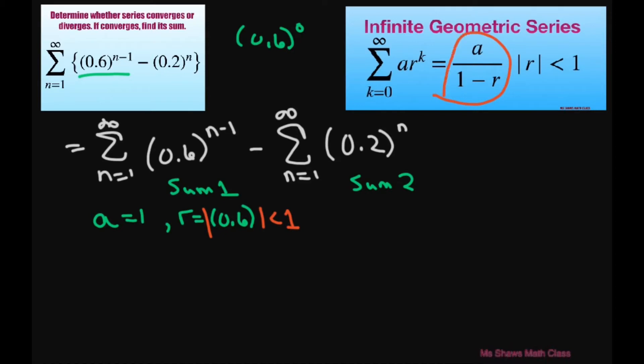It converges to 1 divided by 1 minus 0.6, which equals 1 divided by 0.4, which equals 1 divided by 4 tenths. That's 4 divided by 10, which equals 10 divided by 4, which equals 5 halves. So that's for our first sum.